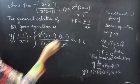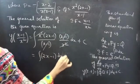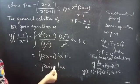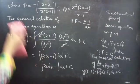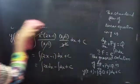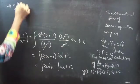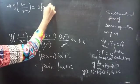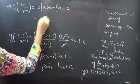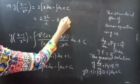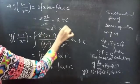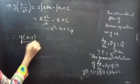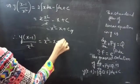Here x squared and (x minus 1) get cancelled, so this equals integral (2x minus 1) dx plus c. Splitting the integral: 2 integral x dx minus integral dx plus c equals 2 times x squared/2 minus x plus c. The 2 cancels, giving x squared minus x plus c. Therefore the required general solution is y times (x minus 1)/x squared equals x squared minus x plus c.